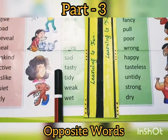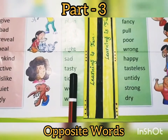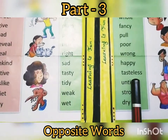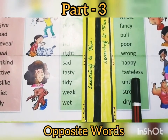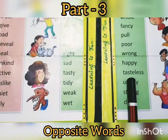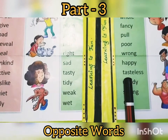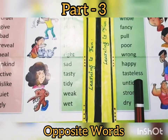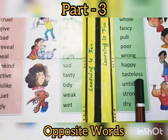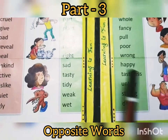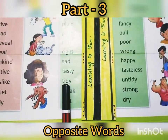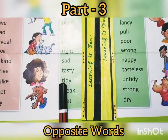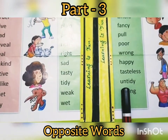That's a very delicious dish. Its opposite is Tasteless — which doesn't have taste. For example, I made pasta the first time and it was completely tasteless. Tidy means Saaf Suthra — very neat and clean. Its opposite is Untidy, means Ganda.